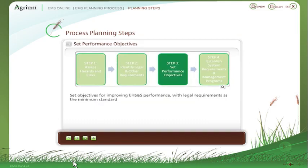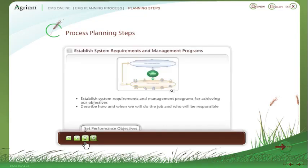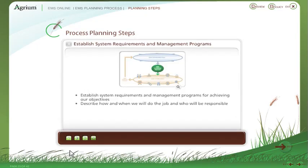In the third planning step, we set our objectives for improving EHS&S performance requirements, using legal requirements as our minimum standard. Finally, we establish system requirements and management programs for achieving our objectives.